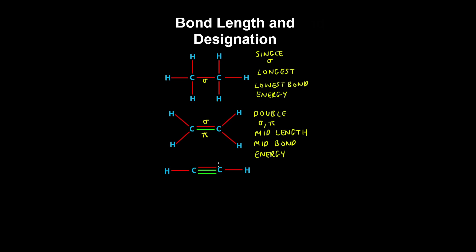Here we have a triple carbon-carbon bond in the acetylene molecule, which consists of one sigma and two pi bonds. Out of the three, it has the shortest bond length and the highest bond energy.